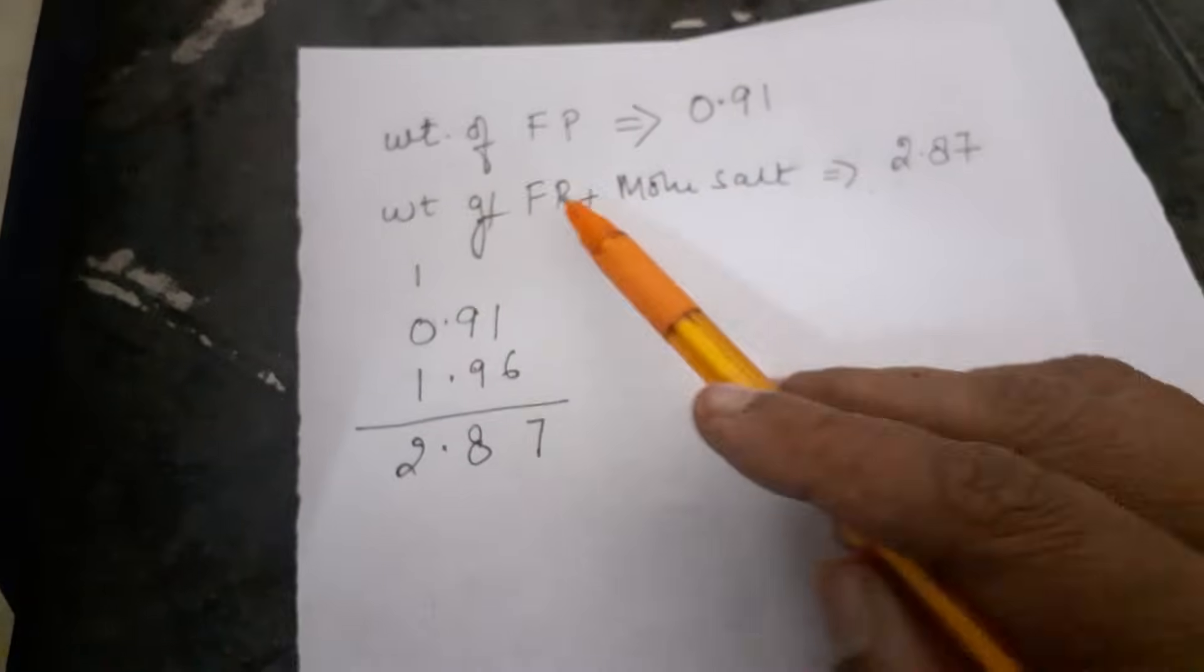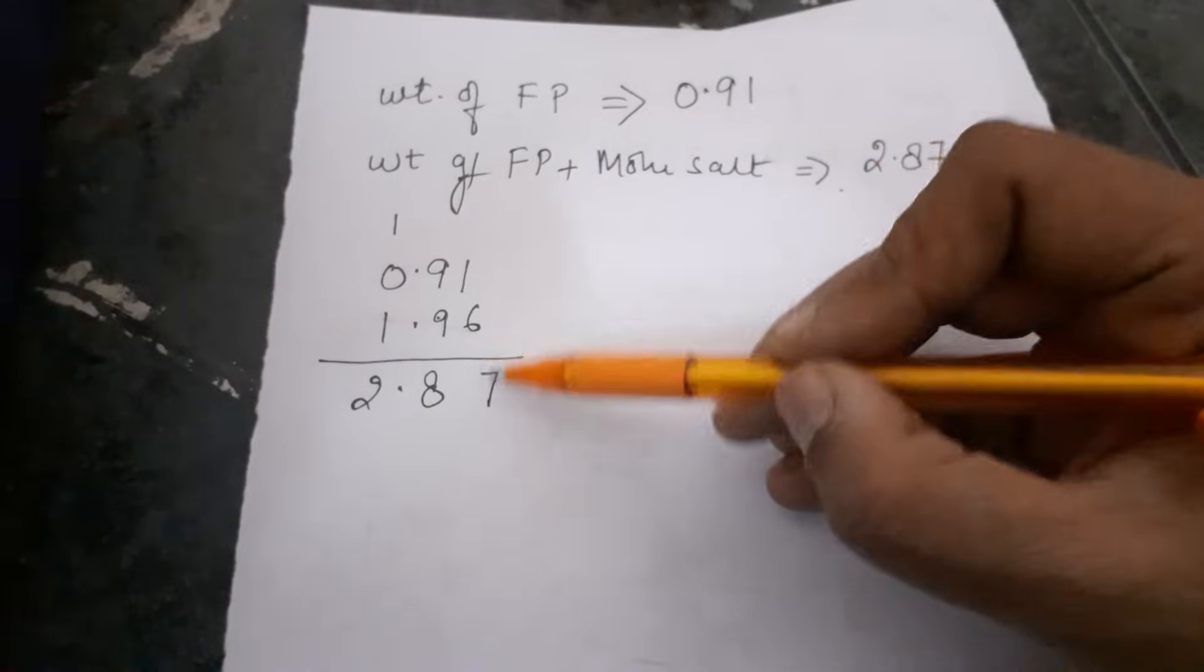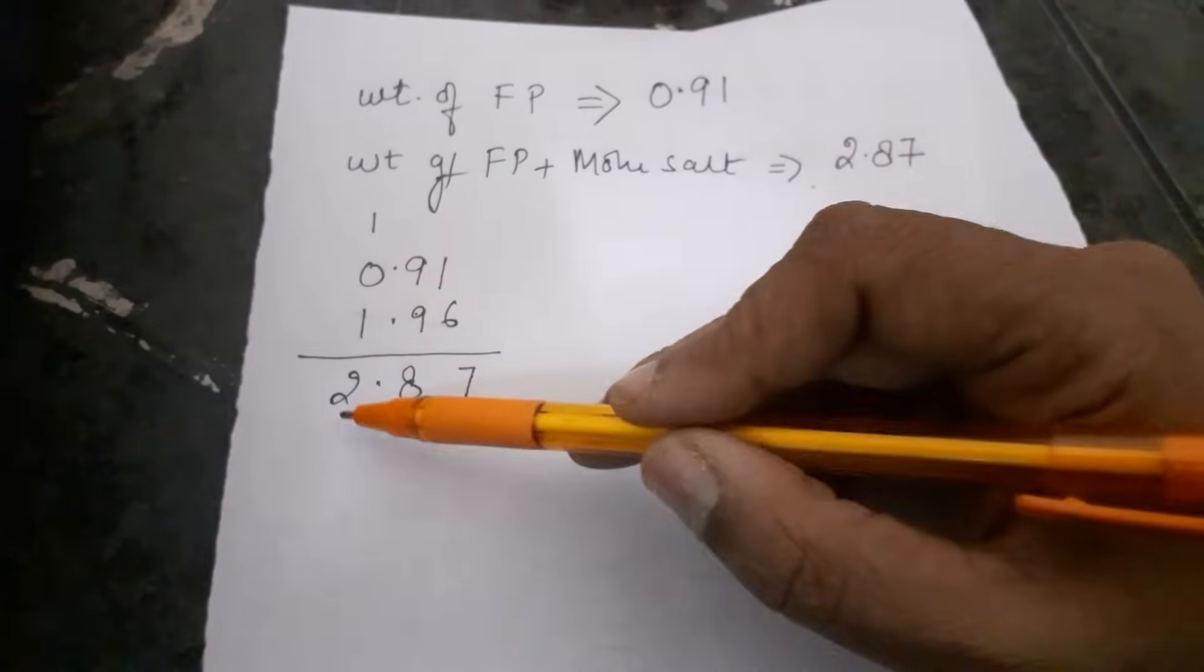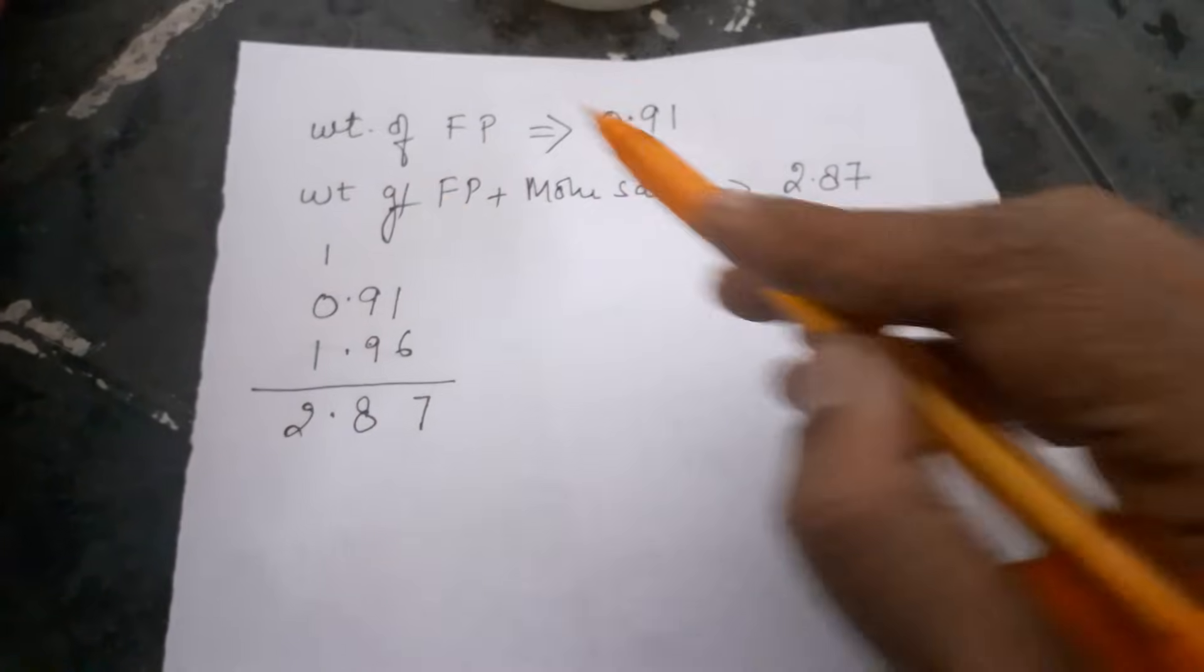Now I have to add Mohr salt. How much did we calculate? 1.96. Add both. You end up with 2.87. So the weight of filter paper and Mohr salt total is 2.87.